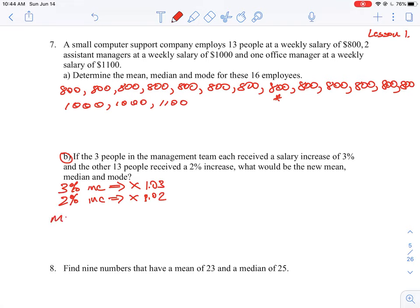So if we were going to calculate the new mean, the mean of this set would just be, we can do it in a quick short notation here. We know we have 13 people that make $800, and we are going to give them a 2% increase. So that's 1.02. So that would be one set of factors. The other people, we have $1,000 times two of them that make $1,000, and they get a 3% increase. Okay, and then we have the last person, which is an $1,100 salary, and they also get a 3% increase.